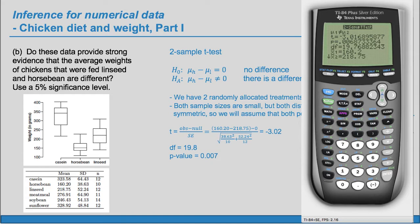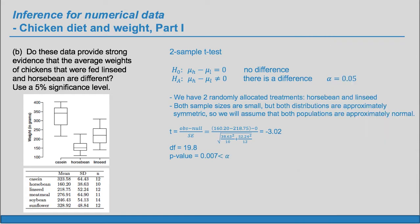We have a t of negative 3.02, a p-value of .007, let's say, and a degrees of freedom of 19.8. This p-value is less than alpha. So our conclusion is, reject H sub O. We have evidence for H sub A. So there is evidence for H sub A. There is evidence that there is a difference in average weights of chickens that were fed linseed and horse bean.